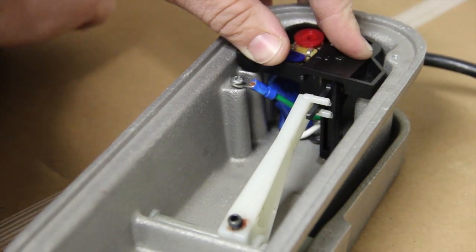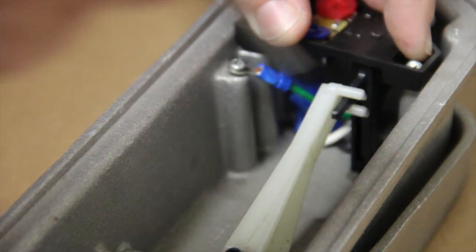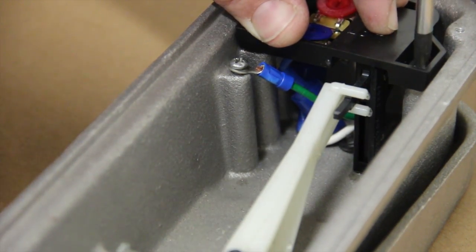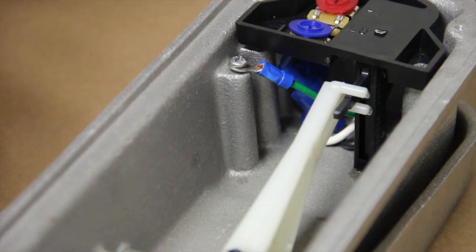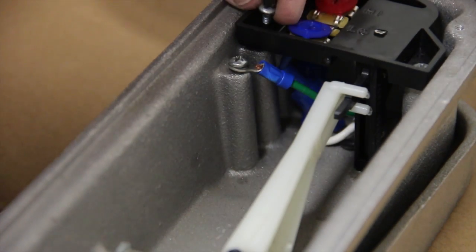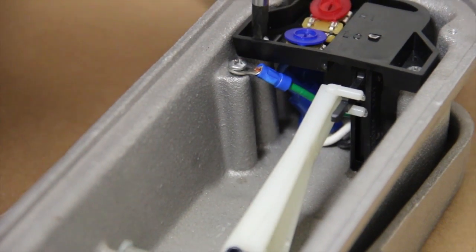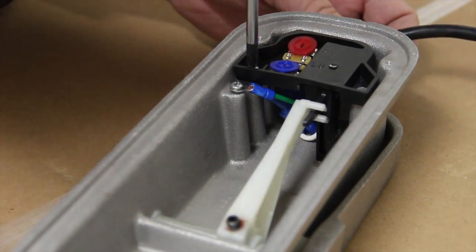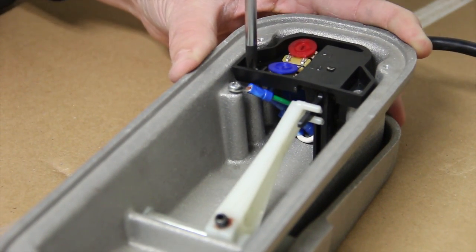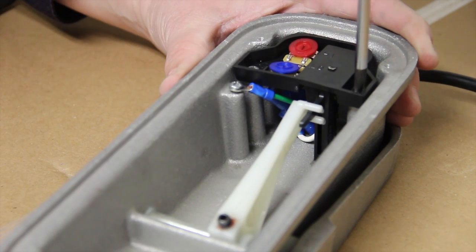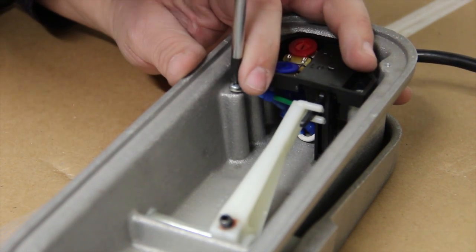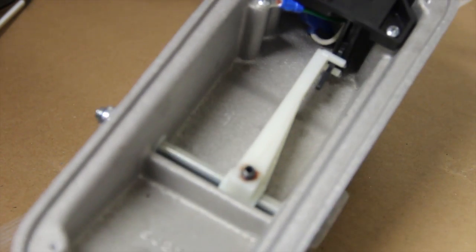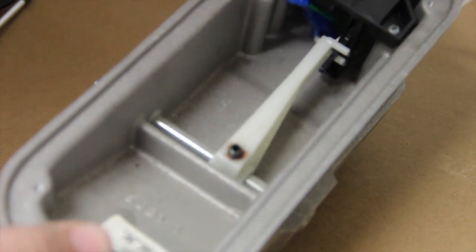Again we're going to put these screws in loosely and then we will tighten everything up. When it's all finished make sure you don't have any pinched wires in there. Tighten everything up here and then we'll tighten that final ground. Make sure that we have good movement in there, nothing binding, no wires rubbing.